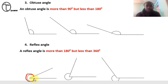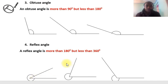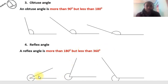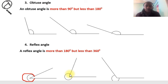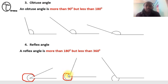A reflex angle is more than 180 but less than 360 degrees. To measure it, we measure the inner acute angle and then subtract from 360 to get the reflex angle. The other examples here are also reflex angles — they are more than a straight line but less than a full circle of 360 degrees.